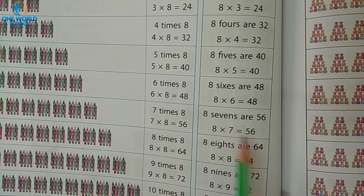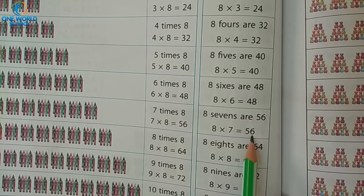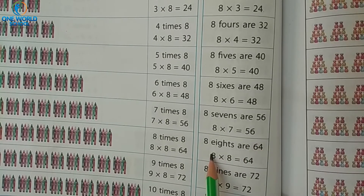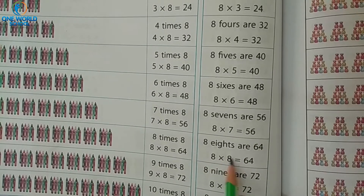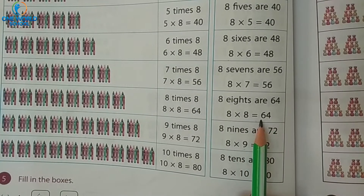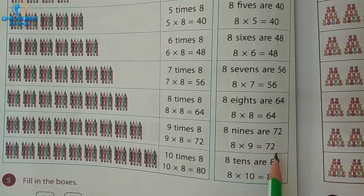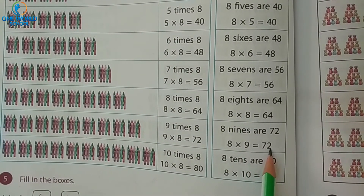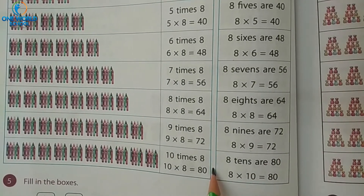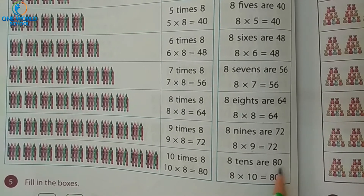8 sevens are 56. 8 eights are 64. 8 nines are 72. 8 tens are 18.